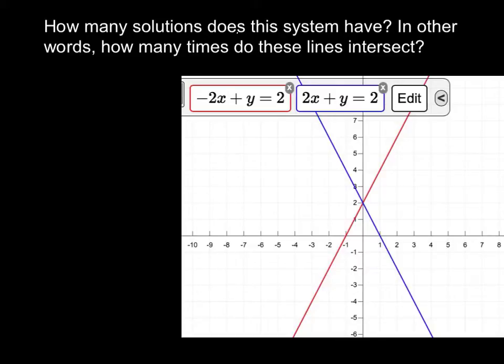So how many solutions does this have? Well you notice right here, this is where the two lines intersect. So where exactly is that in fact? Well, we notice here that this is at 0, 2.